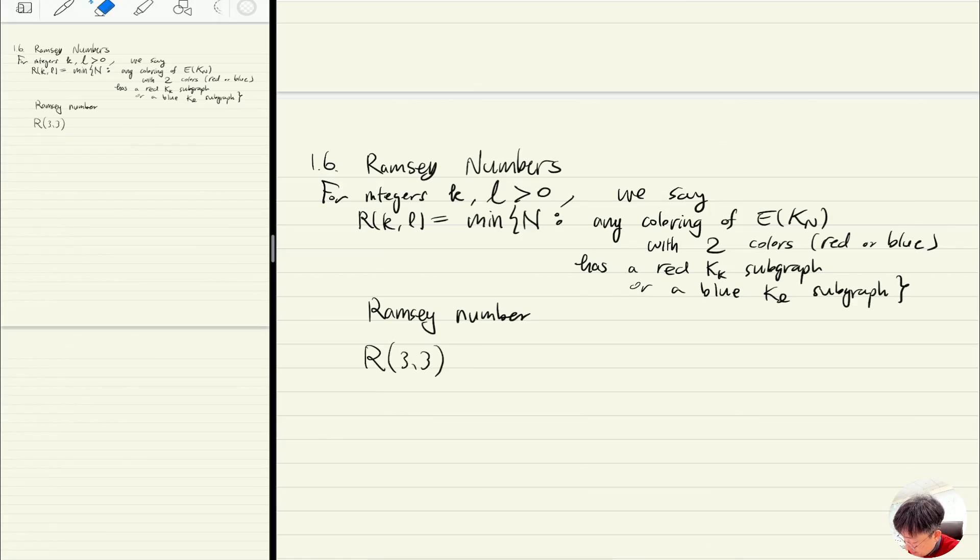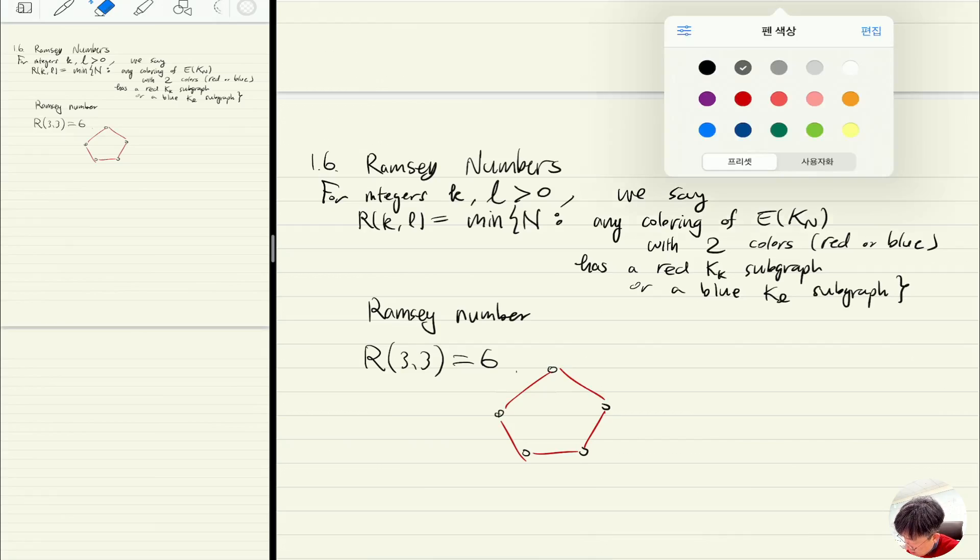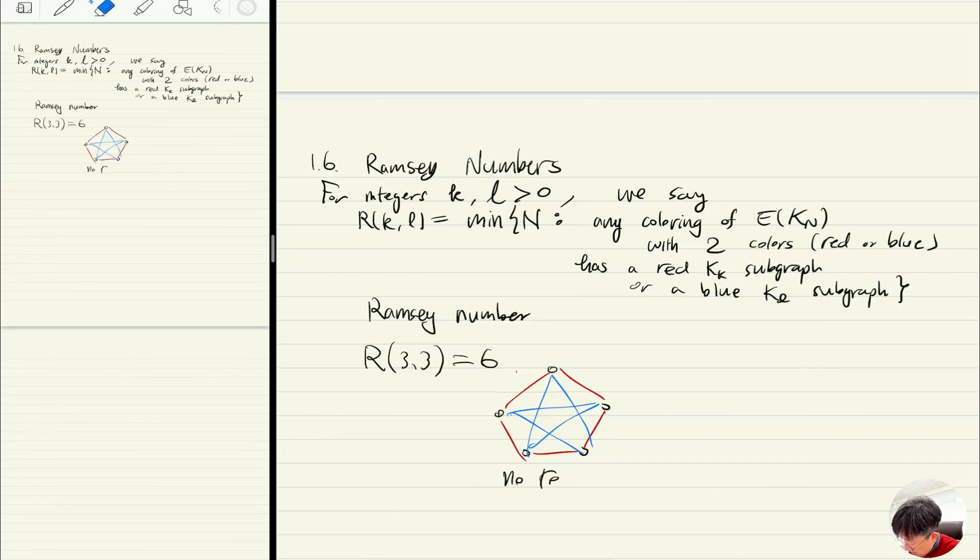For instance, R(3,3) we know is 6, because in K5 you have a coloring where there's no red K3 and no blue K3. This example shows that R(3,3) is bigger than 5.